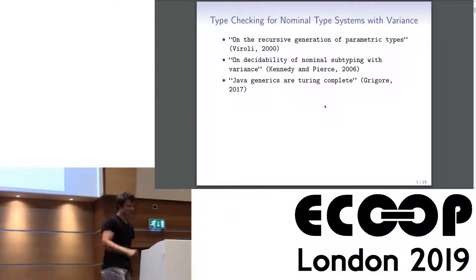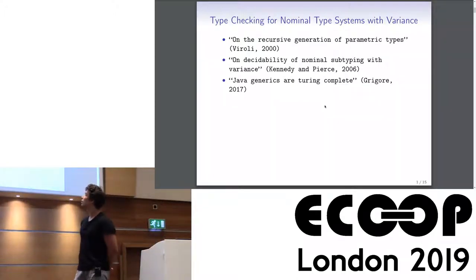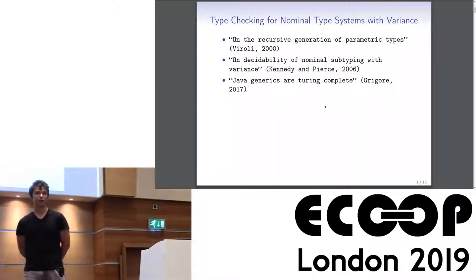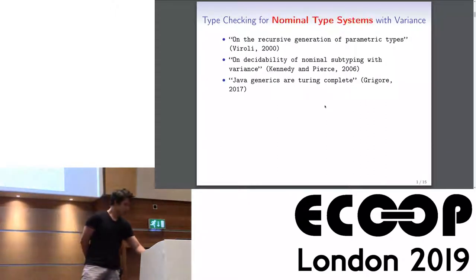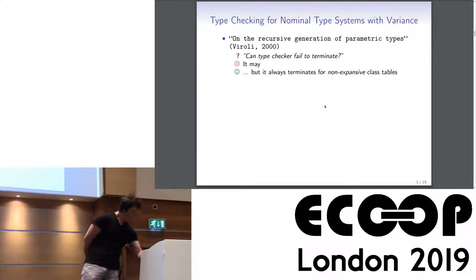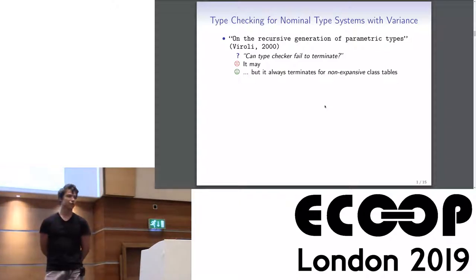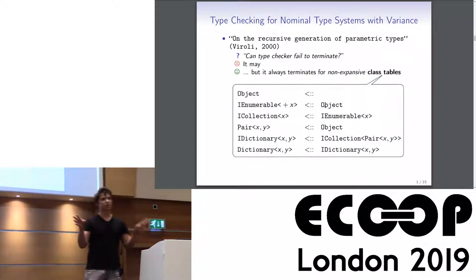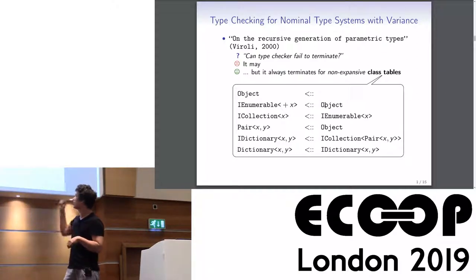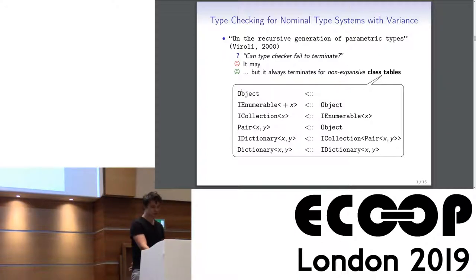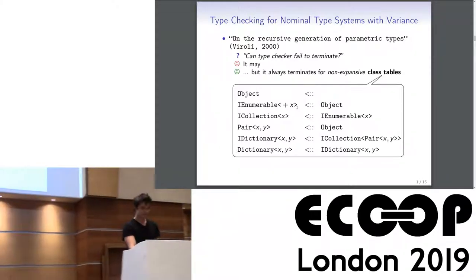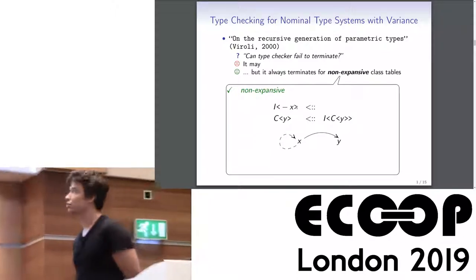The investigations started in 2000 by Viroli, who noticed that the majority of implementations of the type checking procedure in C++ compilers would not always terminate. He determined a sufficient condition for termination and his idea was to constrain the shape of class tables. A class table is just a set of subtyping declarations in a program, with the object declared on the left and the hierarchy on the right, separated by the nominal subtyping sign.